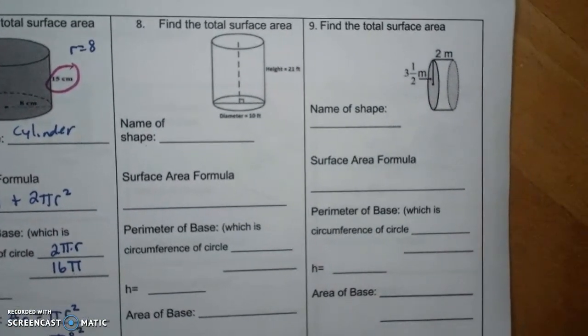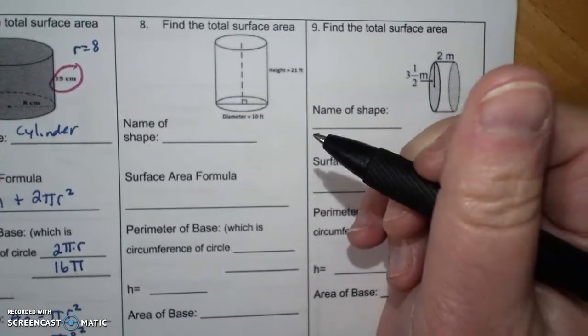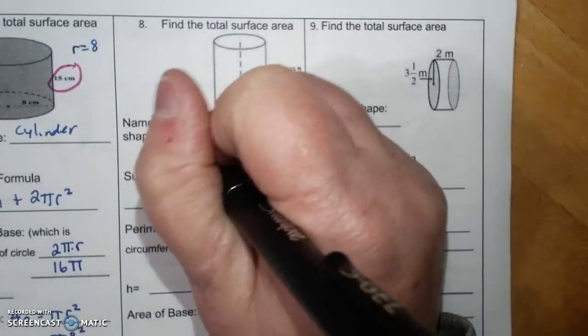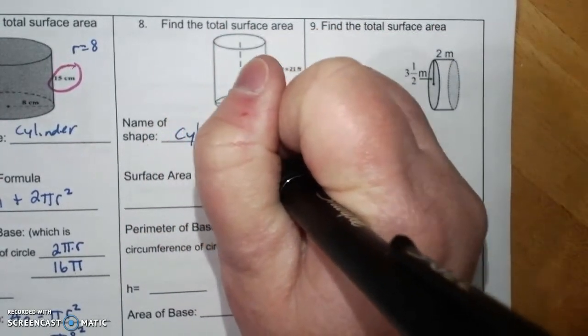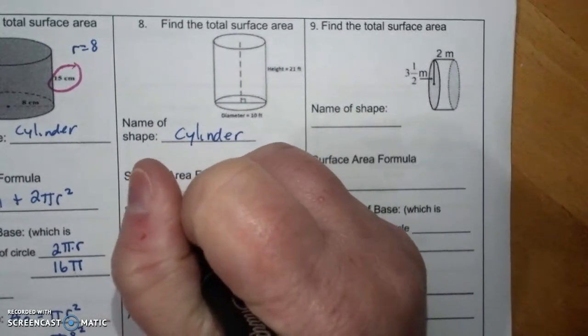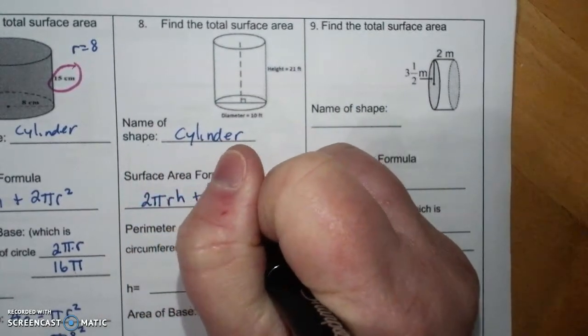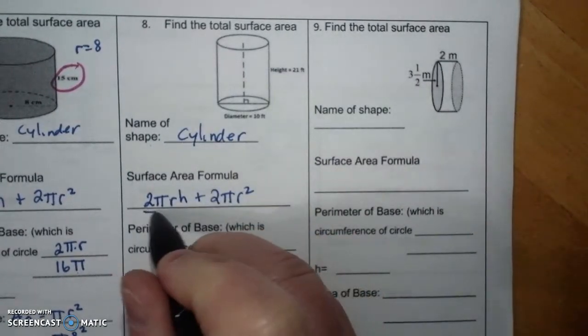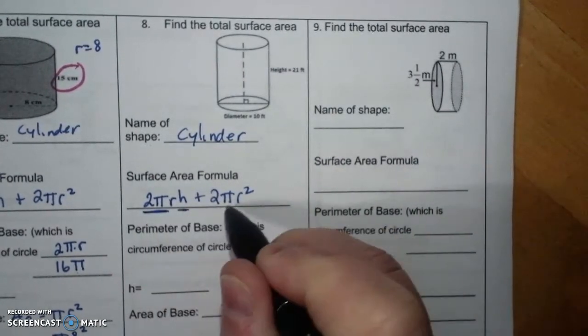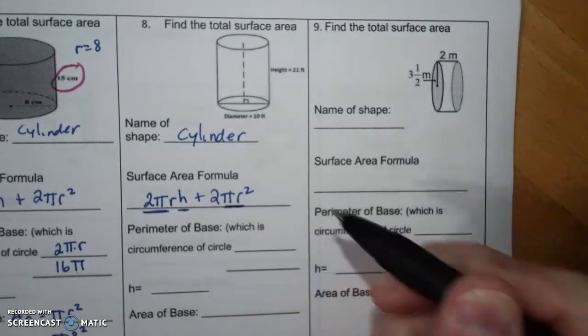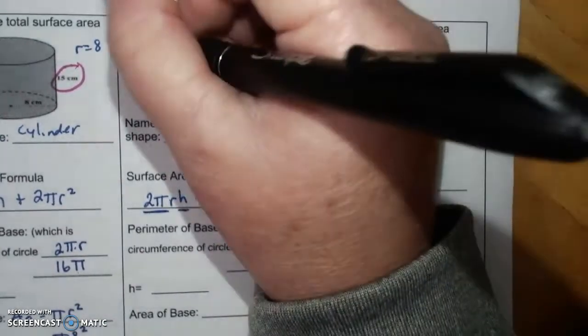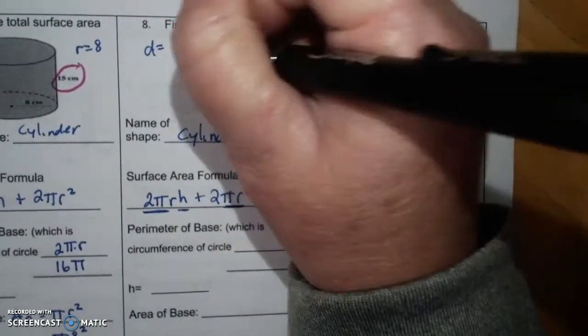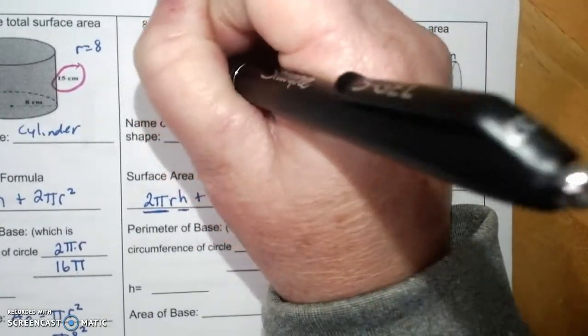Find the total surface area. Name of shape it's a cylinder. Formula 2πrh plus 2πr squared, that's the circumference times the height plus two areas of circles. I have diameter equals 10 so radius equals 5.